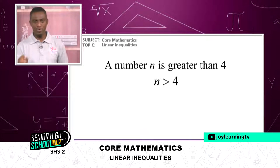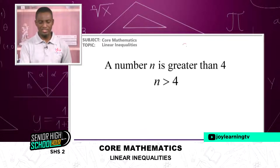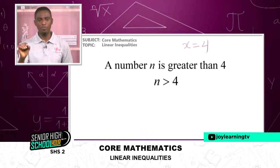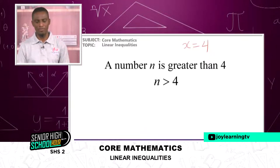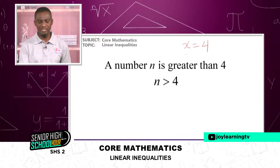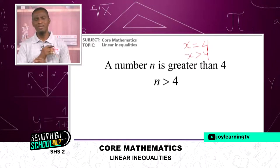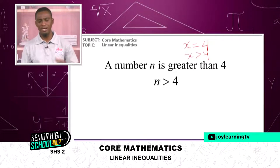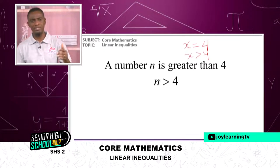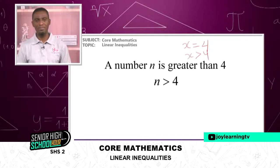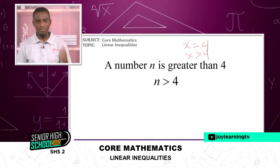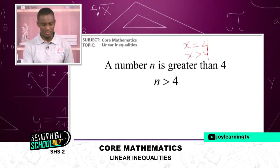When we look at an equation and say x equals four, x gives us an exact value of four. But if we say n is greater than four, n can be a lot of numbers — five, six, seven, up to infinity. So in equations we get a specific answer, but in inequalities we get a range of answers.